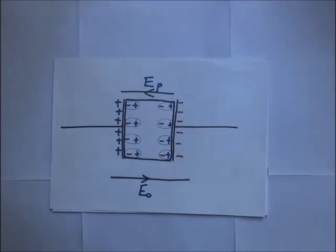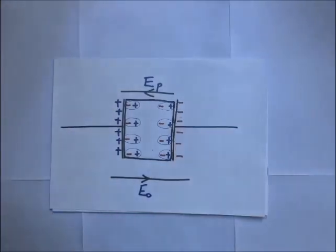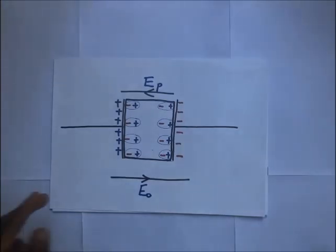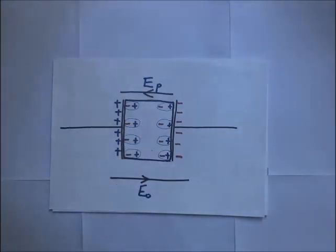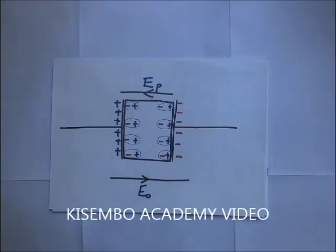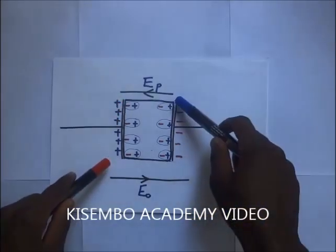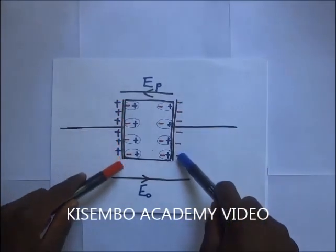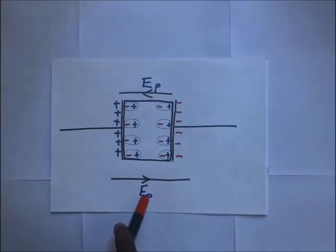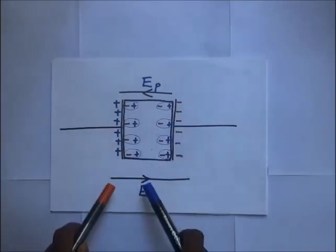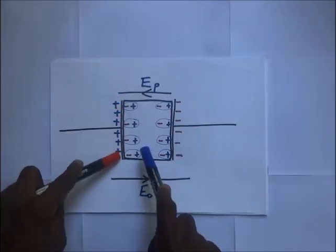This means we now have two fields. The first is the field due to the plates, E₀. The second is the field E_p created by the polarization of the dielectric, but this field acts in the opposite direction to E₀. We know the field moves from positive to negative — the plate field moves in that direction, while the polarization-induced field opposes it.